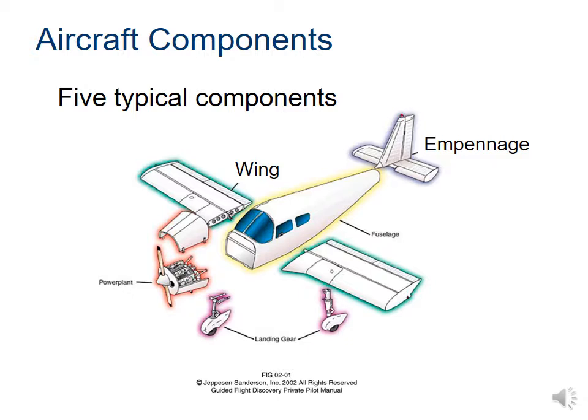The empennage is going to help us maintain stability and change the aircraft's attitude — meaning which way it's pointing — or the direction, meaning up or down. The main function is stability, but the secondary function is going to be maneuverability.